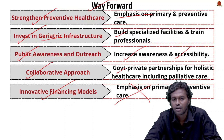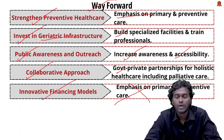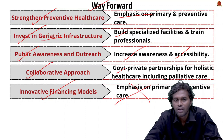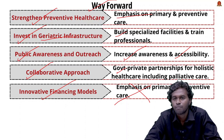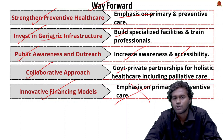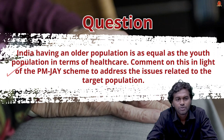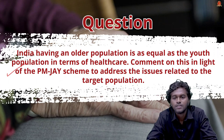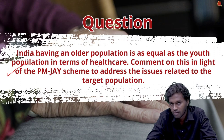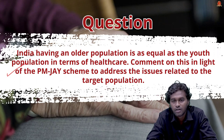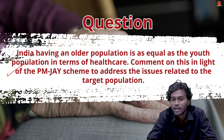So in this topic we discussed PM-JAY, its pros and cons, challenges, and way forward. Based on this, try to answer the mains question: 'India having an older population is as equal as the youth population in terms of healthcare. Comment on this in the light of PM-JAY scheme to address the issues related to the target population.'